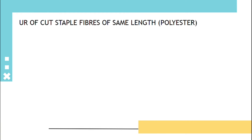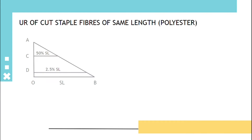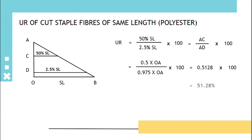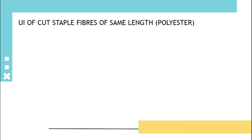For uniformity ratio of cut staple fibers of the same length (polyester): using the fiber graph diagram, uniformity ratio equals 50% span length divided by 2.5% span length. Here, 50% span length is AC and 2.5% span length is AD, so it becomes AC/AD × 100. This gives 0.5/0.975 × 100 = 51.28%.